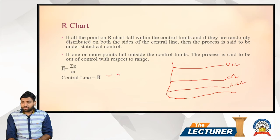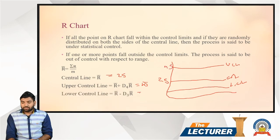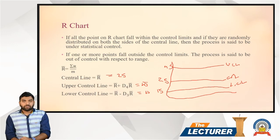Suppose the central line is 25, the upper control line is 45, and the lower control line is 15. If any sample falls between 15 and 45, then this process is called a statistically under-control process; if not, then this process is called an out-of-range process.